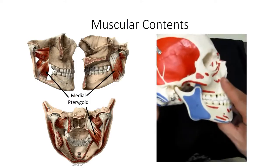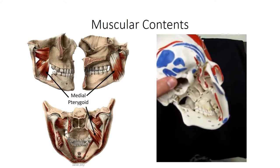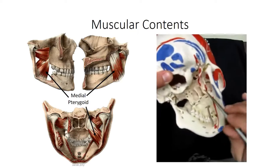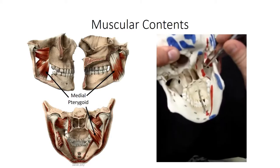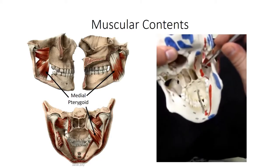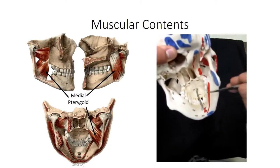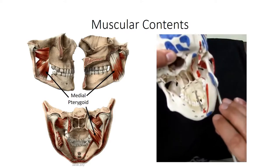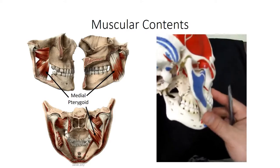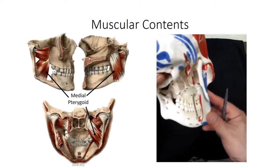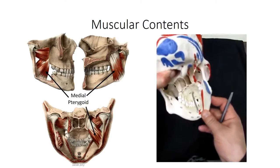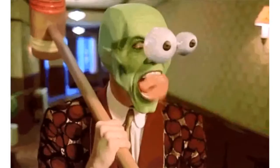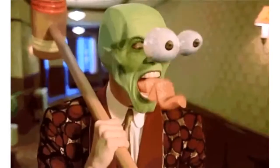Inferior to the lateral pterygoid is the medial pterygoid muscle. This is another bicipital muscle originating off the medial surface of the lateral pterygoid plate, as well as the palatine bone. The heads converge on the internal surface of the ramus of the mandible, just opposite to the masseter muscle. As you might expect from the direction of pull, the medial pterygoid also assists in closing the jaw. In addition to their roles in opening and closing the jaws, the pterygoid muscles also play a role in side-to-side motions of the mandible.